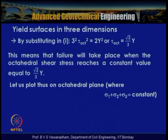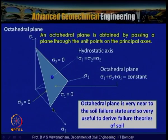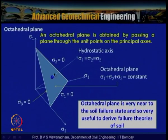Let us plot this on the octahedral plane, where the octahedral plane is the plane on which σ₁ + σ₂ + σ₃ = constant. The octahedral plane is obtained by passing a plane through the unit points on the principal axes σ₁, σ₂, σ₃. The hydrostatic axis is where σ₁ = σ₂ = σ₃, passing from the origin through the center point.